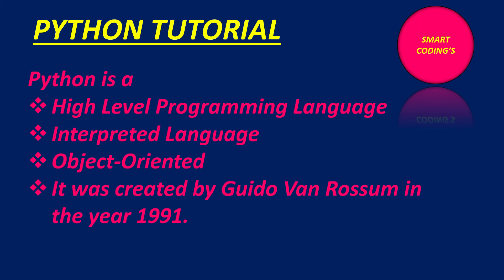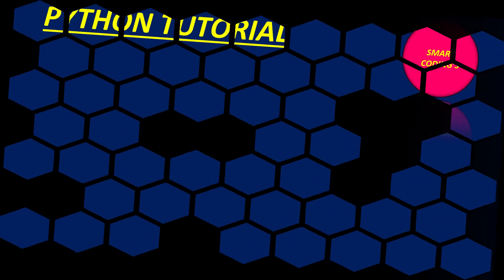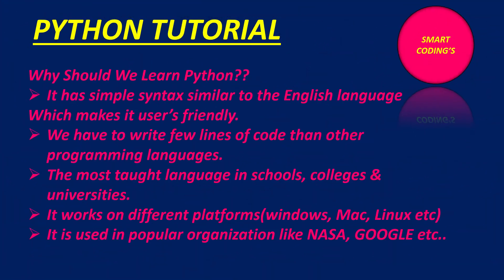Next is, why should we learn Python? We should learn Python because of the following reasons. Syntax is very simple to the English language which makes it user-friendly to learn quickly. Anybody can learn it very quickly because syntax is very simple. Next is, we have to write few lines of code than other programming languages as compared to other languages like C, C++ and Java. In this Python programming language, when we write a program in an IDE, it requires very few lines of code, which makes it again simple and easy to program. So next is, most taught programming language in schools, universities and colleges nowadays is Python.